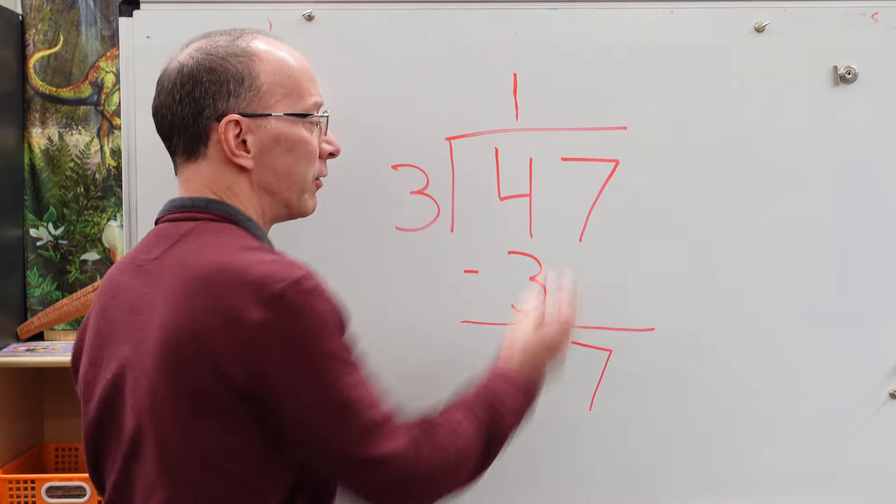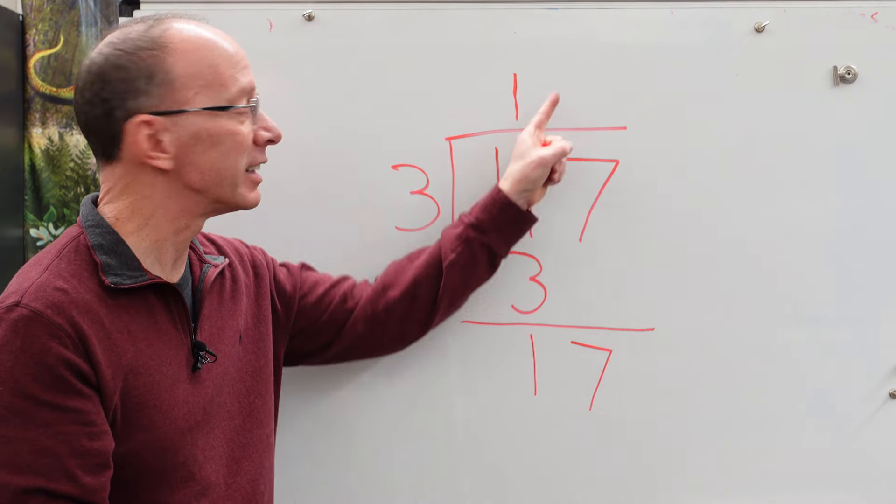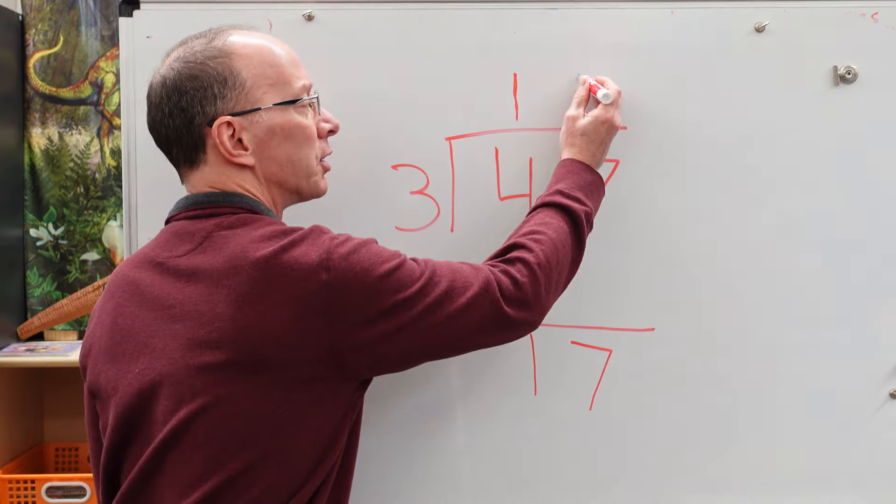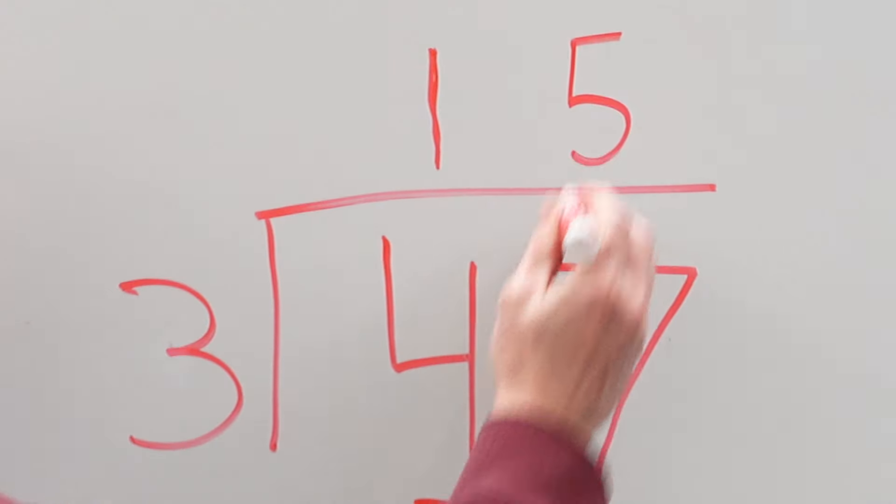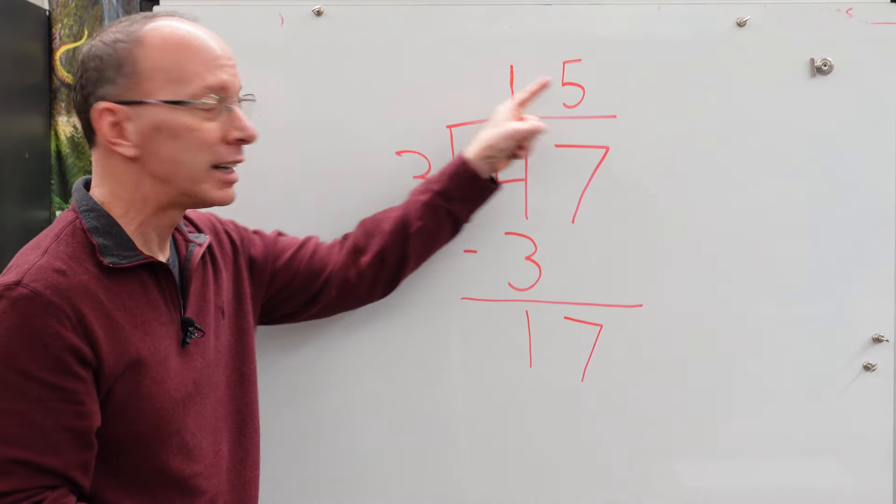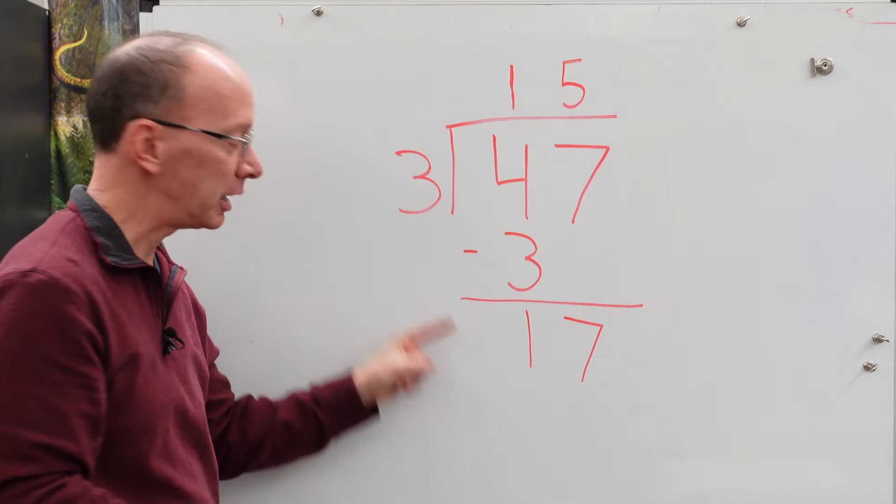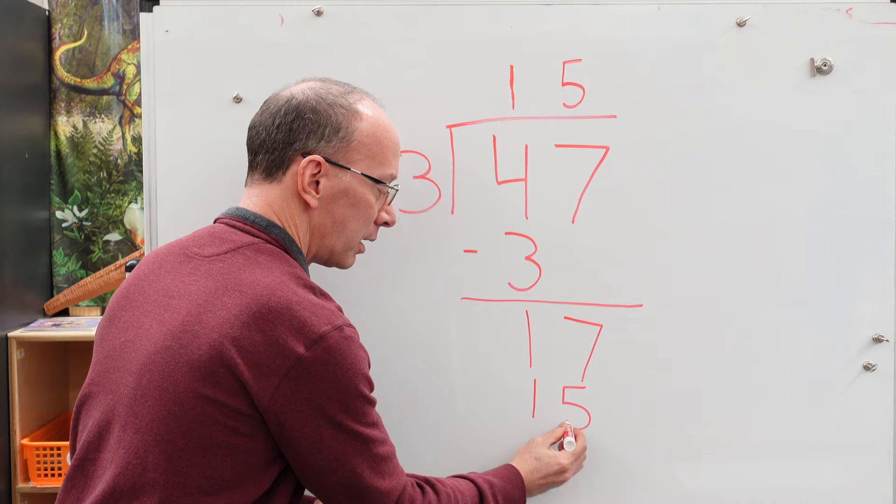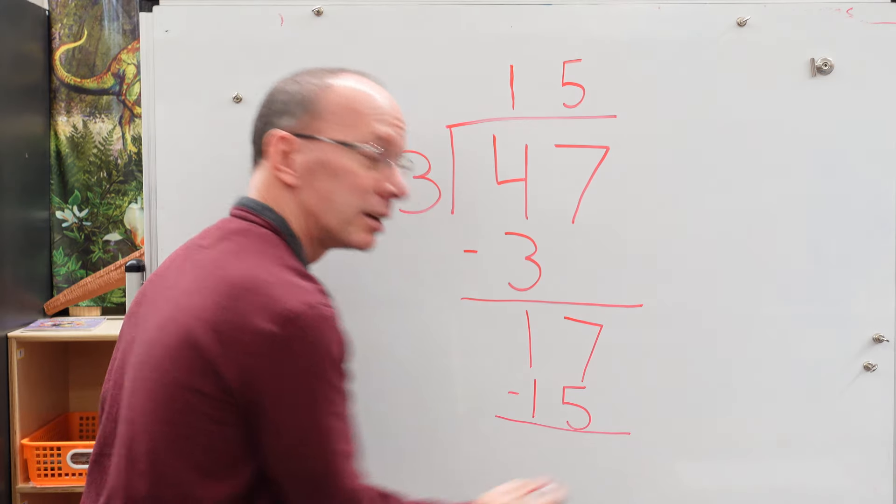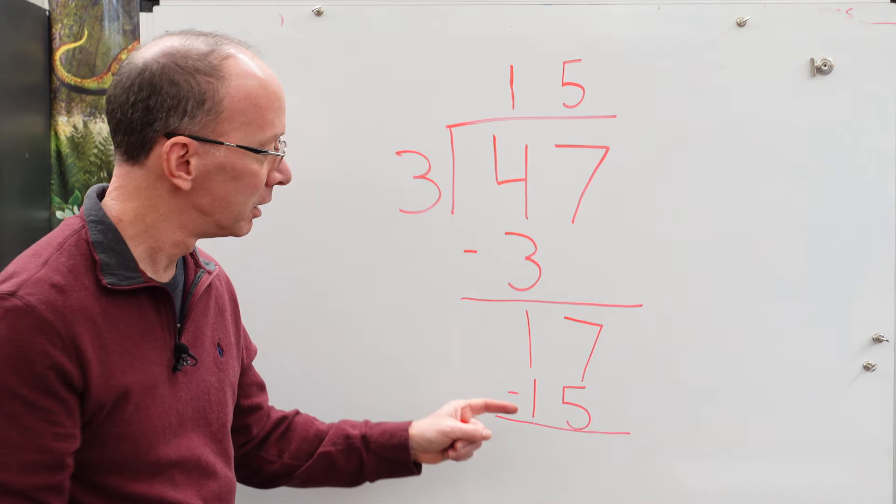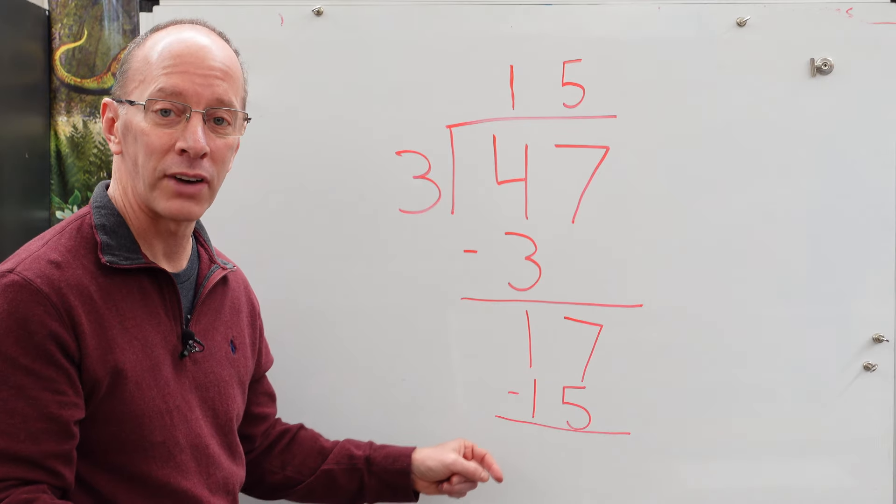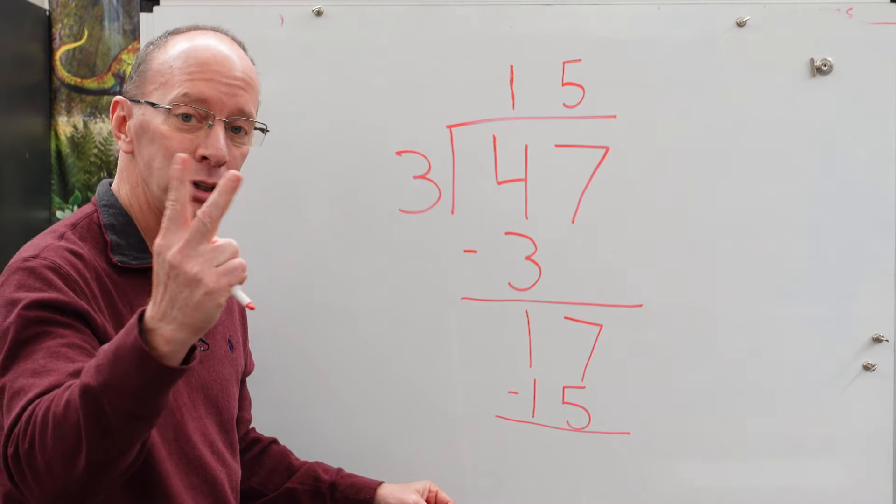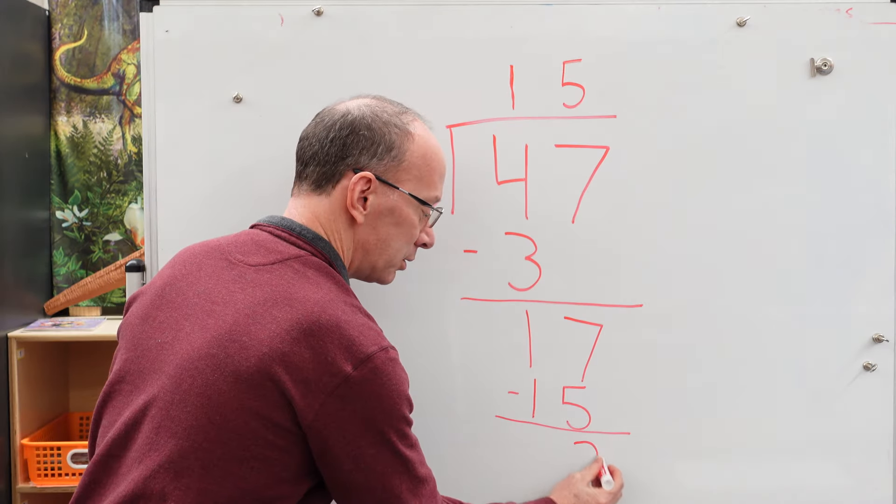So we take five. We got to put that five right above the seven right here. Make sure it's right above there. Don't put it anywhere else. So five times three equals 15. Put that 15 right here. And now we have to do a little subtraction again. Seven minus five is two. Put that two right there.